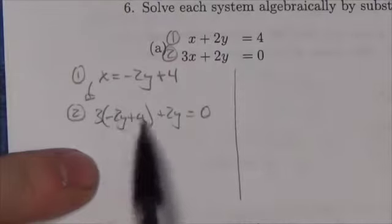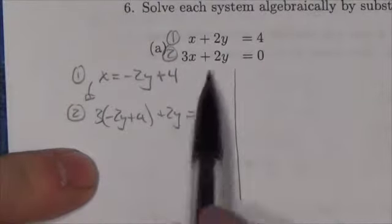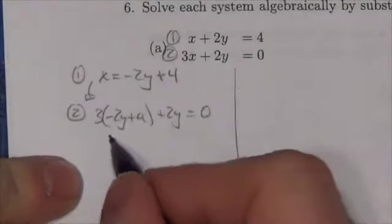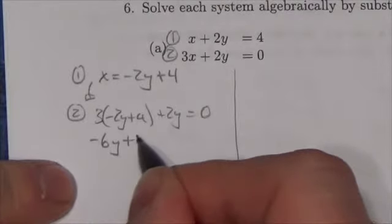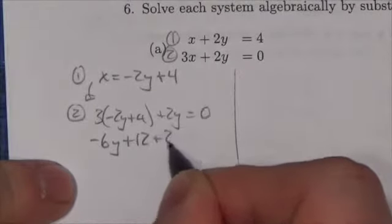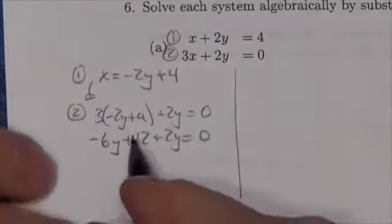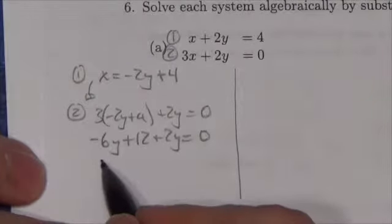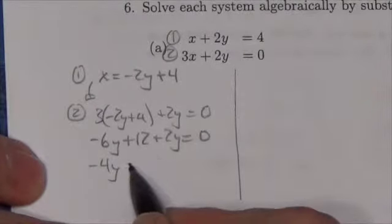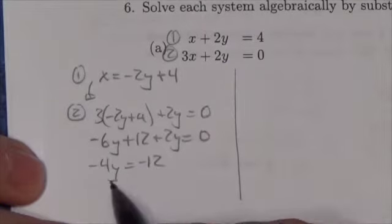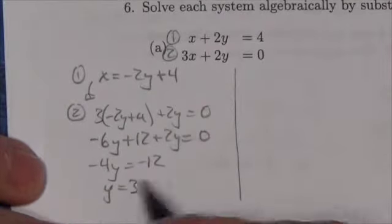Now expand that out. I'm going to get negative 6y plus 12 plus 2y equals 0. So now what have we got here? This is going to be negative 4y, bring the 12 over to get negative 12, so y equals positive 3.